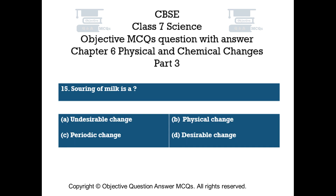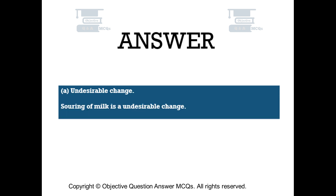Question number 15. Souring of milk is: Option A undesirable change, Option B physical change, Option C periodic change, Option D desirable change. The right answer is Option A — undesirable change. Souring of milk is an undesirable change.